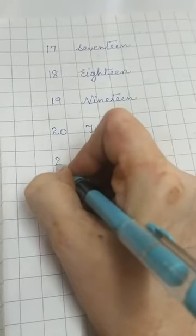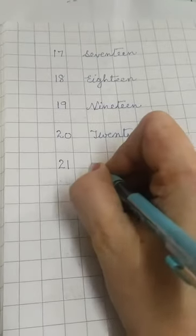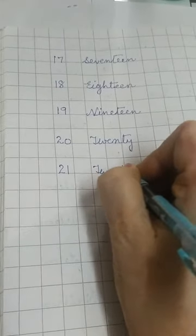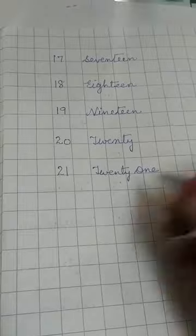Now again 21. Now 20 spellings will be same and then you will keep on adding 1, 2, 3 like T-W-E-N-T-Y, and 1 is O-N-E, one. Twenty-one.